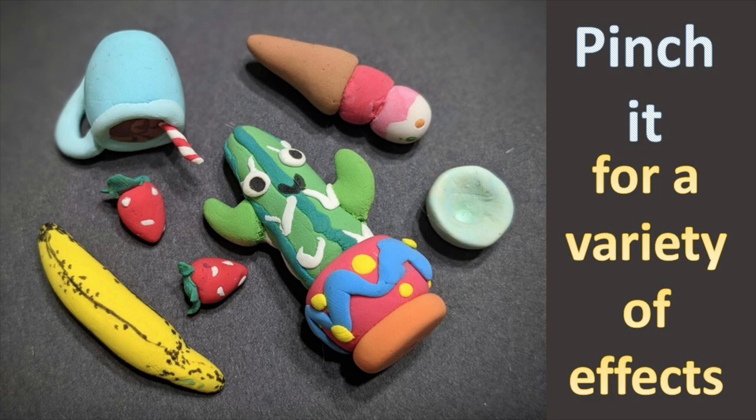Each of these creations was made by either first rolling a coil or a sphere and then pinching it into its shape. So the strawberries were a sphere that were pinched at the tip and so was the banana and the cone. The cactus also got pinched at the top of each of its limbs.